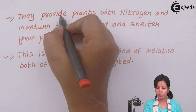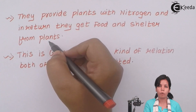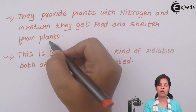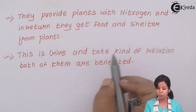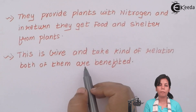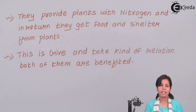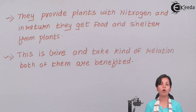Bacterial biofertilizers provide plants with nitrogen and in return they get food and shelter from plants. In the process of providing nitrogen, they help the plant to grow better. This is basically a give and take kind of relationship — both of them benefit from each other. Whenever you grow pulses, Rhizobia or Azatobacter is present inside the soil which helps the plant to grow better and absorb nitrogen. I hope you all have understood what bacterial biofertilizers are and what symbiotic association or give and take relationship means.